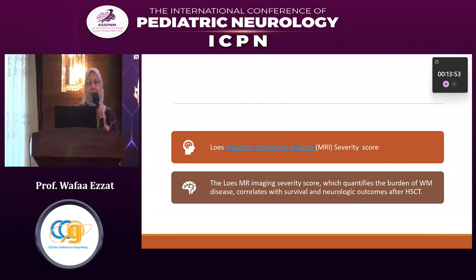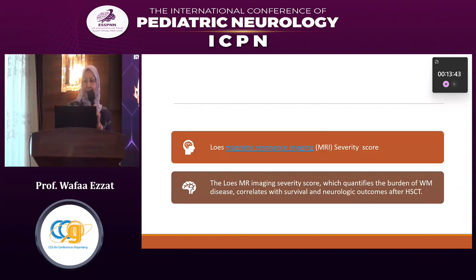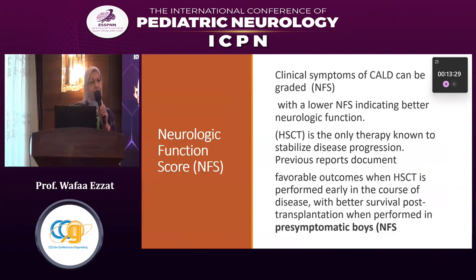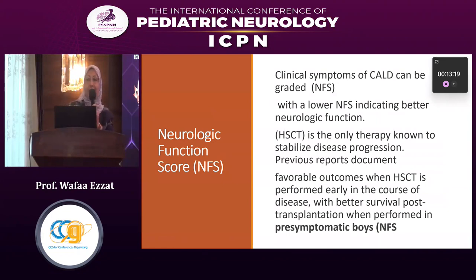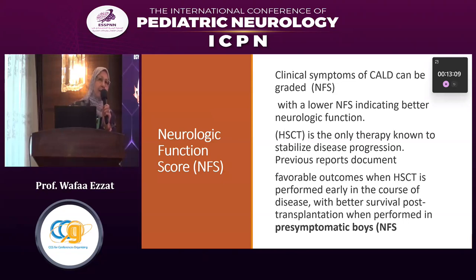We use the Loes MRI severity scoring to detect the burden of white matter disease. This score correlates well with survival and neurological outcome after hematopoietic stem cell transplantation. Another scoring system is the neurological functional score — when it is low, it indicates better neurological function. We depend on both the MRI score and the neurological scoring to guide timing of hematopoietic stem cell transplantation in the pre-symptomatic stage.